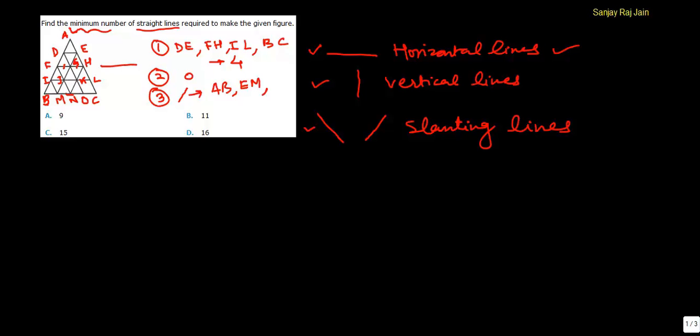So this line is... this line is EM, HN, all right. And now other slanting lines which are of this shape, these are AC, the biggest one, DO, FN. I think you got it, IM.